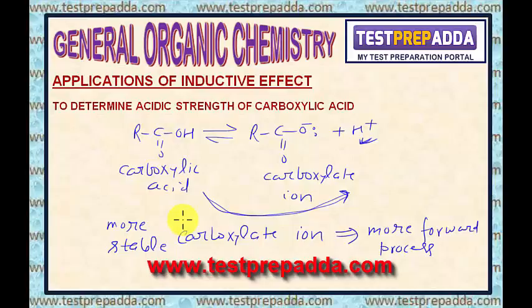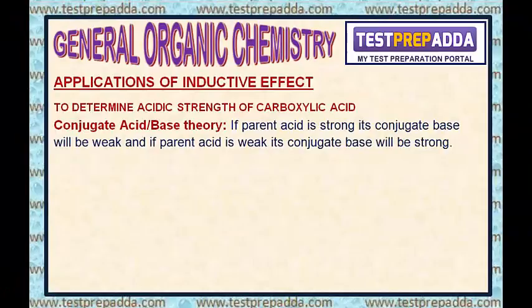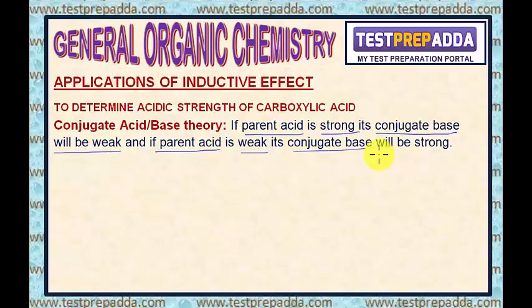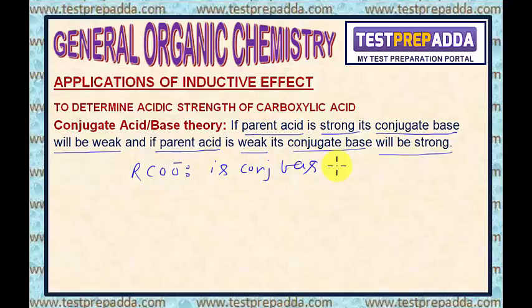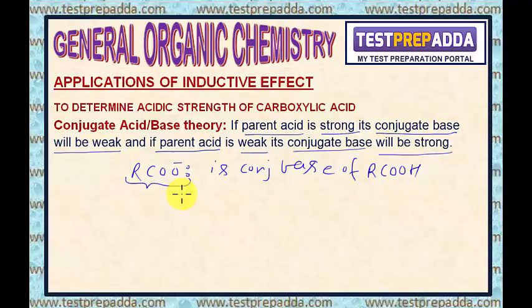In the chapter ionic equilibrium, we talked about conjugate acid-base theory. This theory says if the parent acid is strong, its conjugate base will be weak, and if the parent acid is weak, its conjugate base will be strong. RCOO⁻, the carboxylate ion, is actually the conjugate base of the parent RCOOH, the carboxylic acid. So if we are able to find the basic strength of this carboxylate ion, we will be able to predict the acidic strength of the parent.